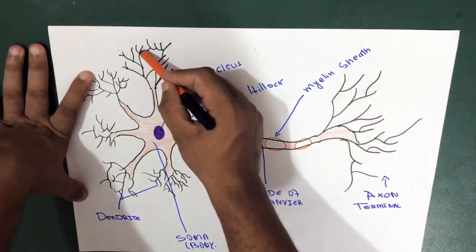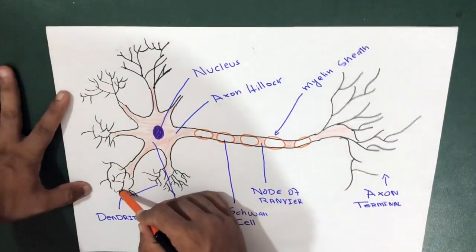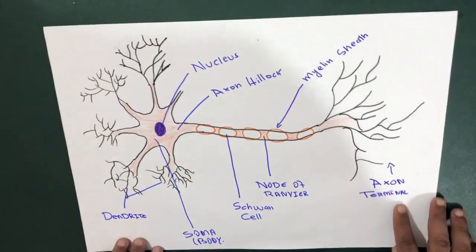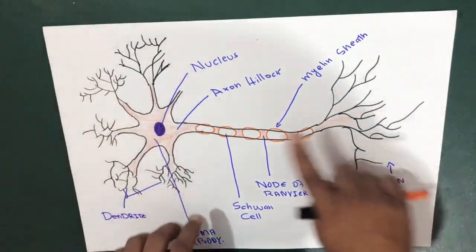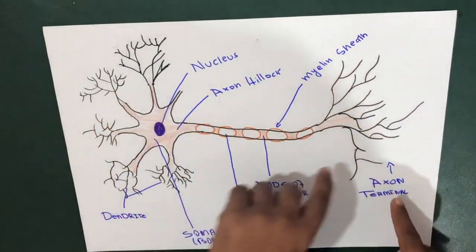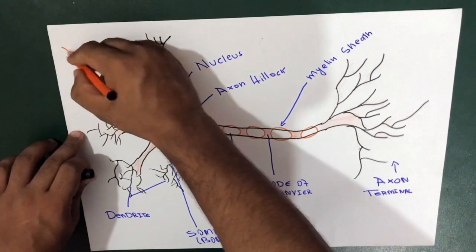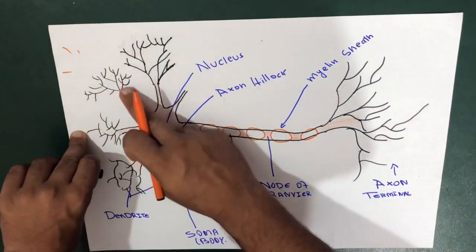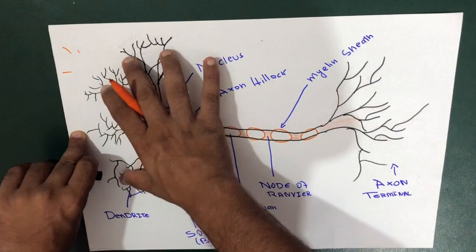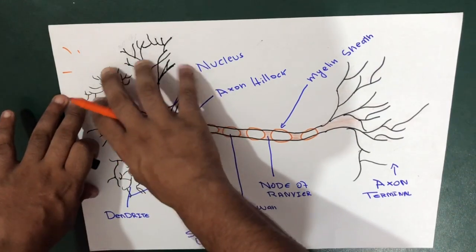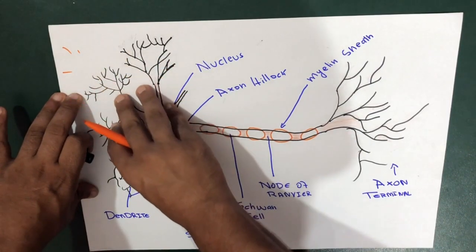All right, now this is the basic structure. We will start from here, from the dendrite. So what happens is the neuron receives messages from another neuron through the axon terminal. There are axon terminals over here, and this information reaches the dendrites. This is the starting point.